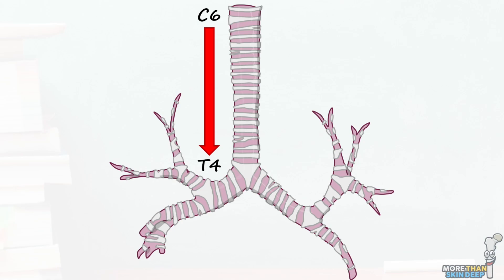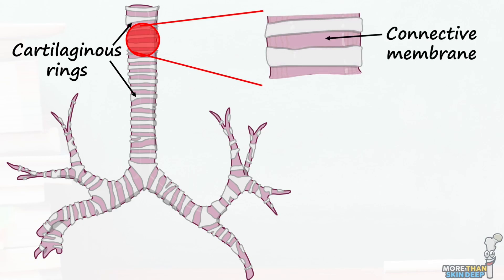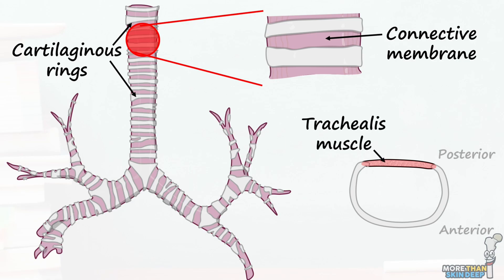The trachea itself is composed of 16 to 20 C-shaped cartilaginous rings that are connected to one another by a thin membrane. Posteriorly, the free edges of these rings are joined to one another by the trachealis muscle. This muscle can contract to narrow the trachea, which facilitates coughing and also provides room for expansion of the oesophagus when swallowing food.